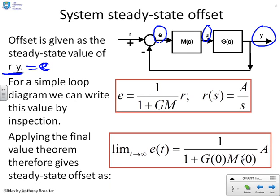So if I apply the final value theorem to E of S, then I get the limiting value as t goes to infinity of E of T equals 1 over 1 plus GM times A. So we've got an explicit expression for the steady state offset. Here it is down here. An explicit and simple expression.